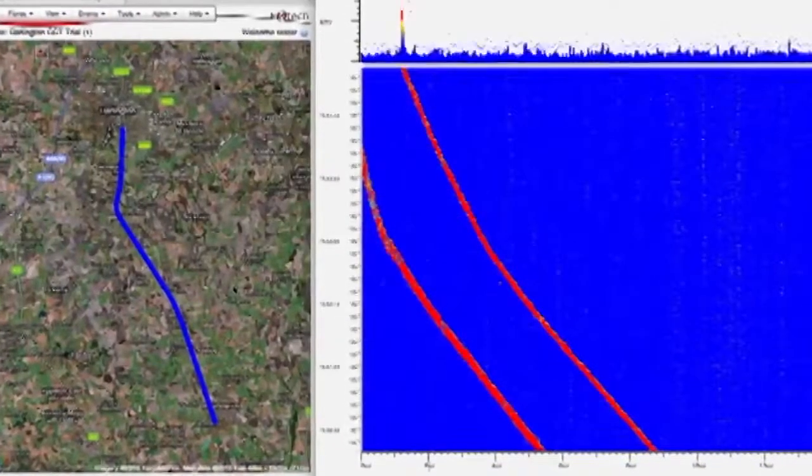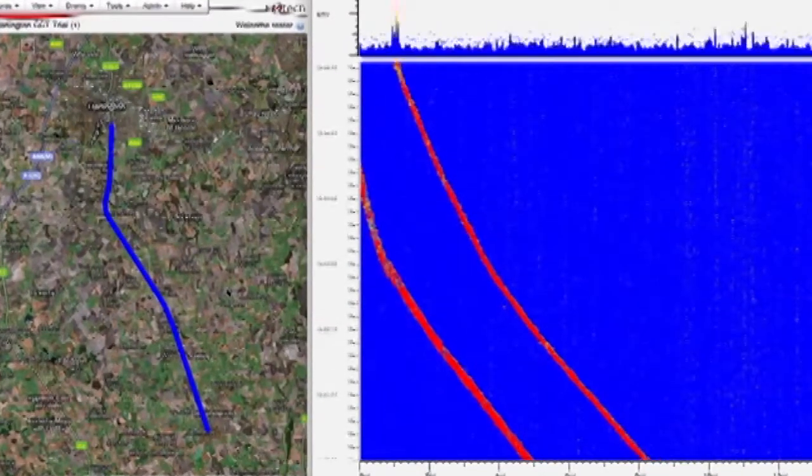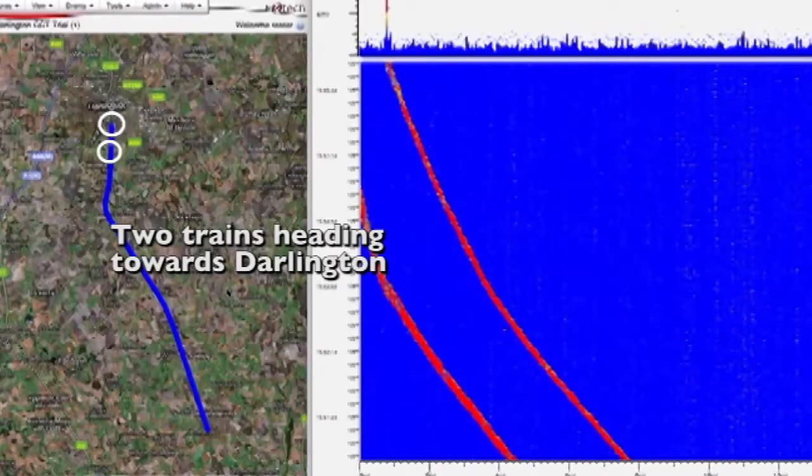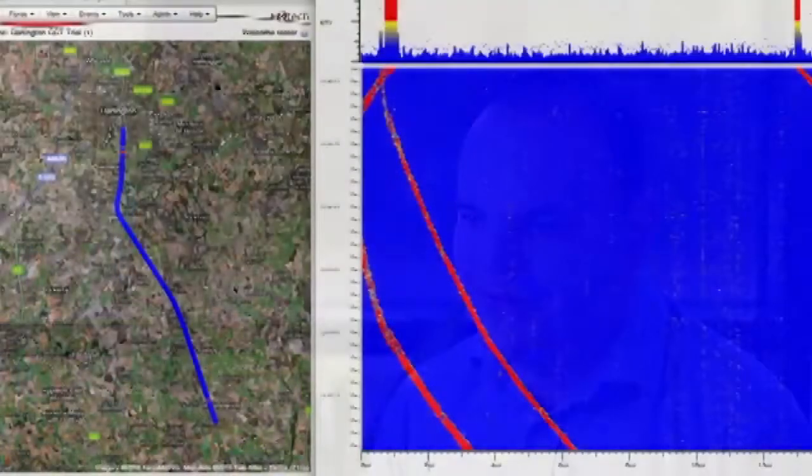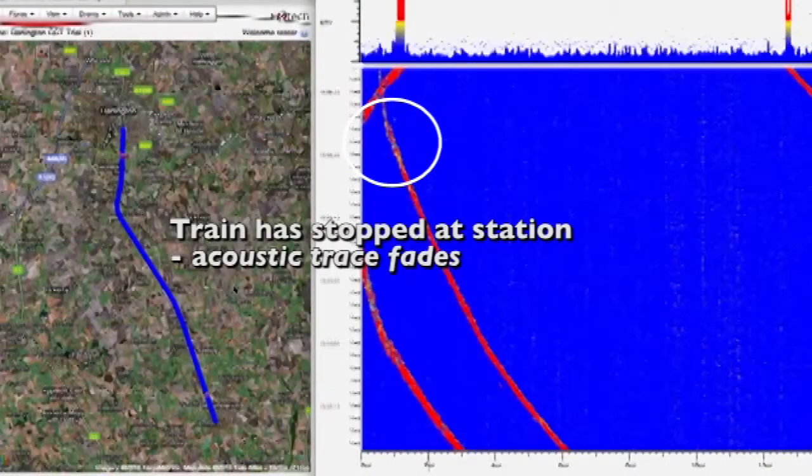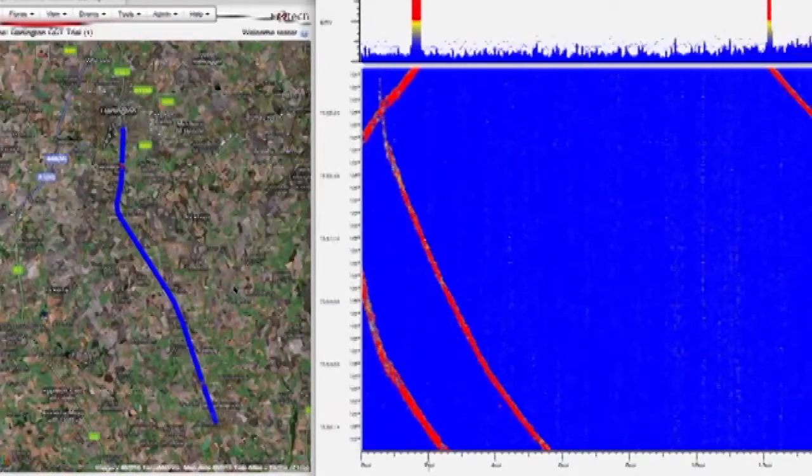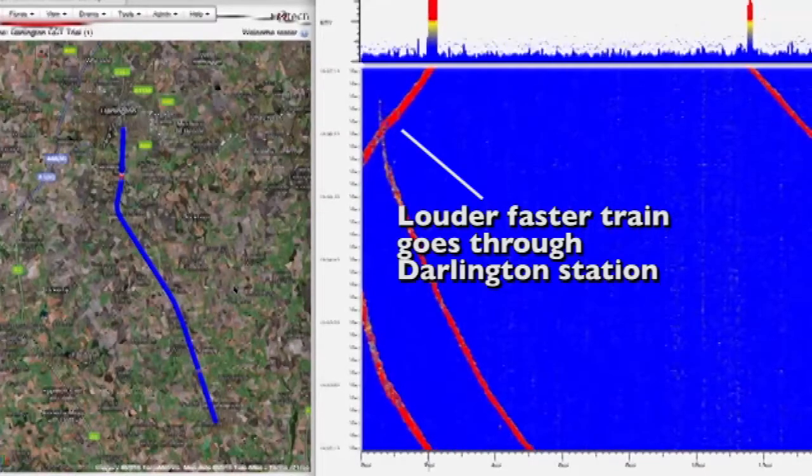At the start of this clip, we can see two trains travelling in the same direction towards Darlington separated by a period of some minutes. One train has already disappeared from the screen and another one is approaching Darlington Station and coming to a full stop. As it does so, a train moving in the opposite direction, travelling towards North Allerton, appears.